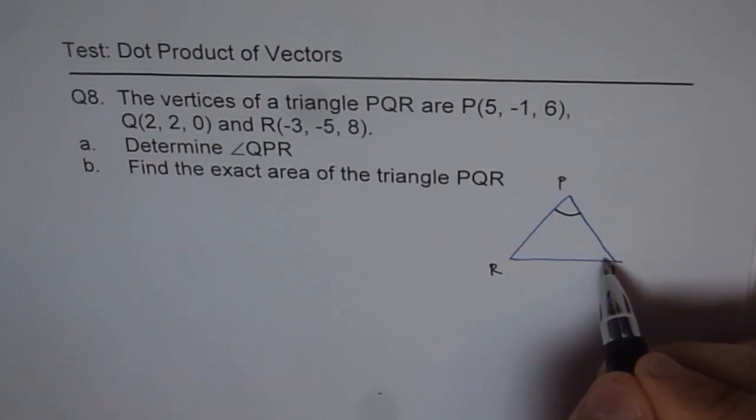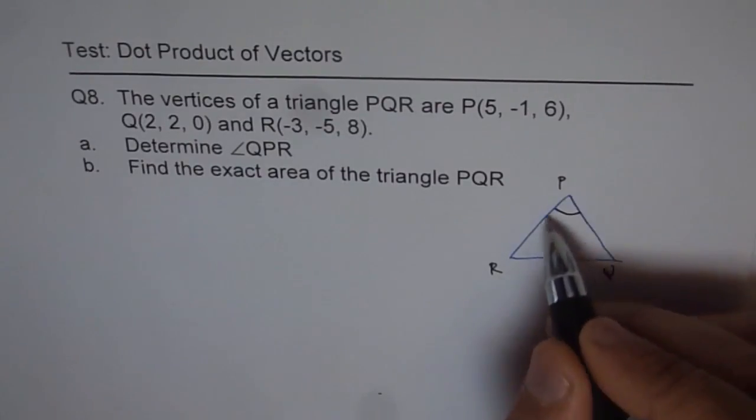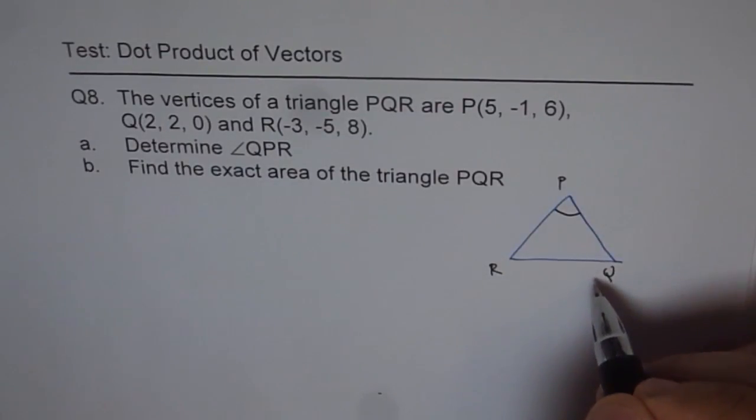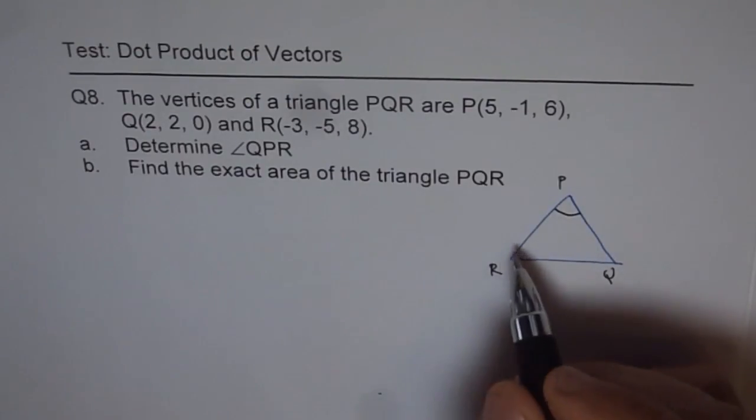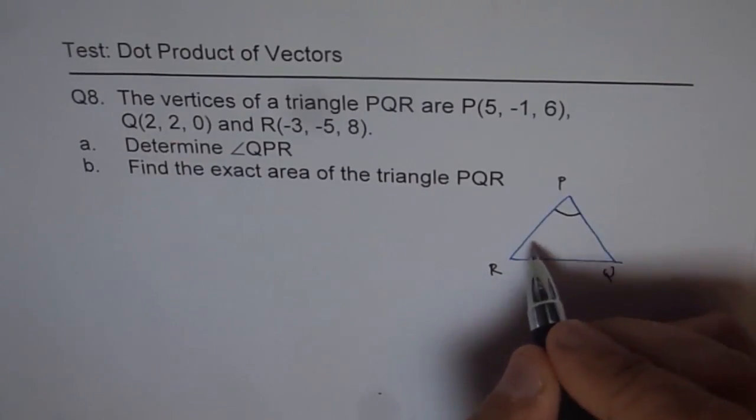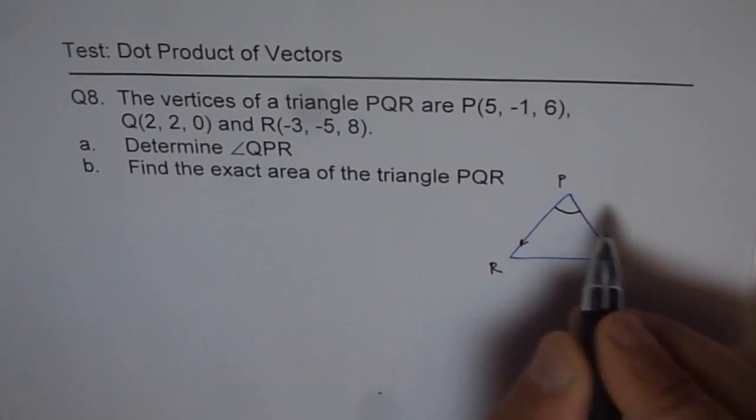Now to find this angle we need to find what is PQ and what is PR. Once we get these two vectors then we can use dot product and get the answer. So let's find out what are these two vectors.